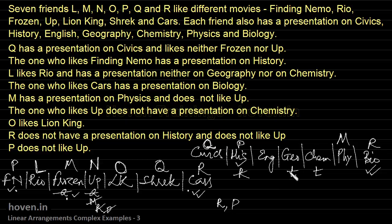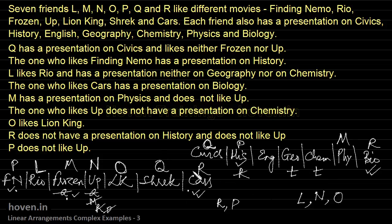We are left with L, N, and O to allocate among English, Geography, and Chemistry. L cannot come at Geography or Chemistry (already crossed). Therefore L is allocated to English — the only remaining option for L.